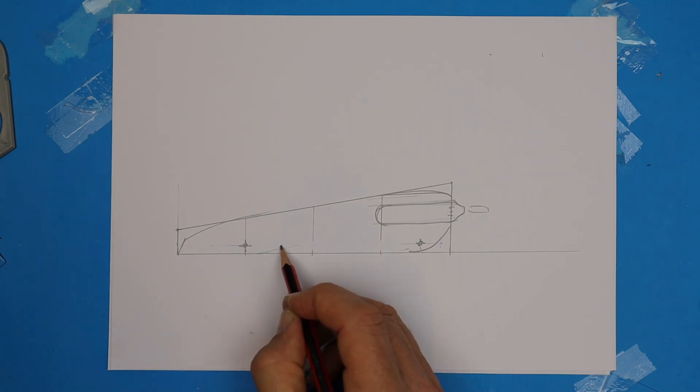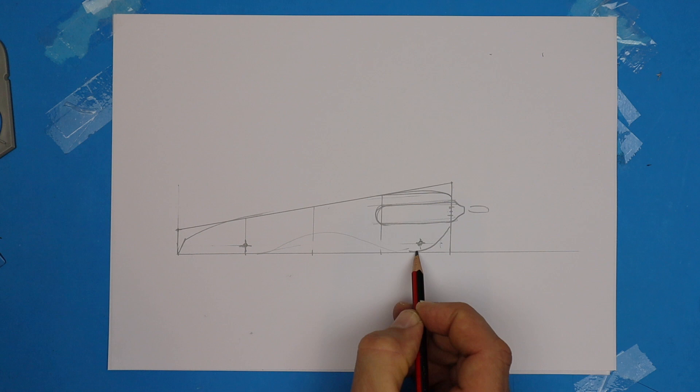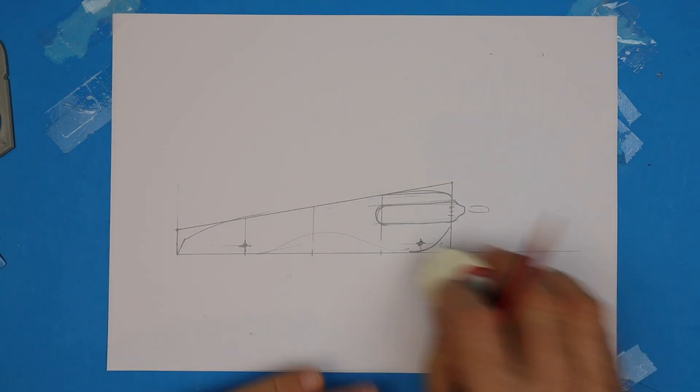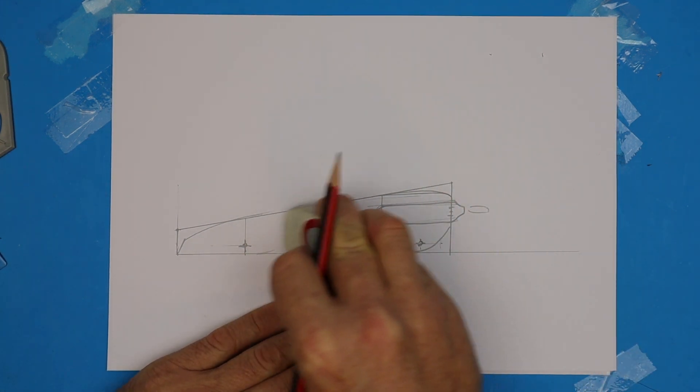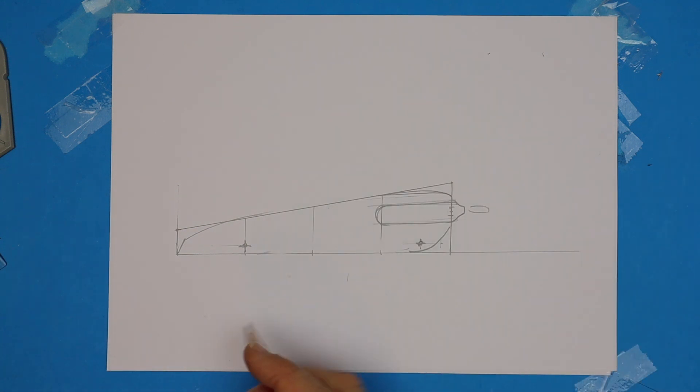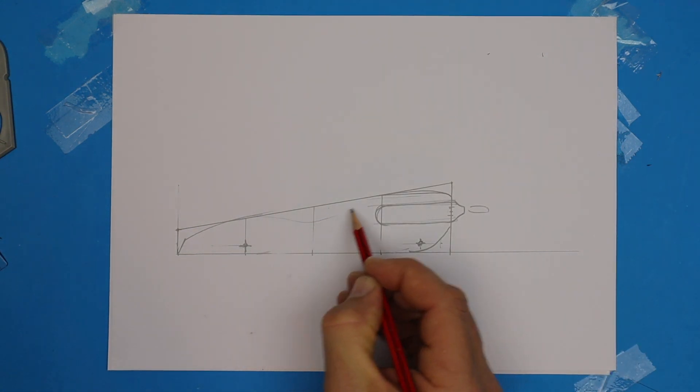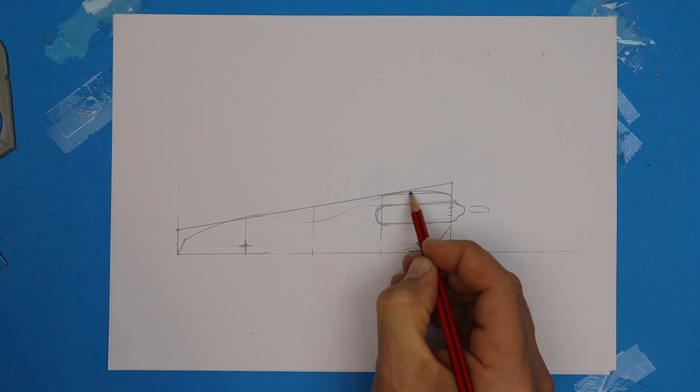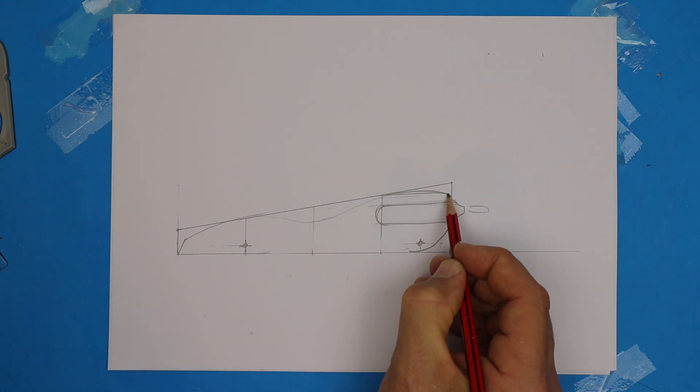A light dragster is a fast dragster. One way to reduce weight is to remove material from underneath, forming kind of a waist. Another option might be to remove material from the top or maybe the front.